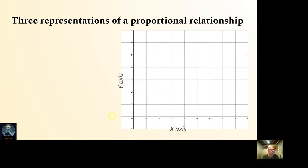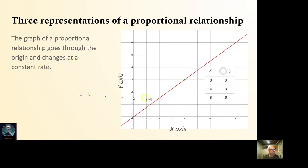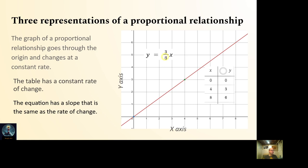There are three representations of the proportional relationship. You have the graph, which is a straight line, going through the origin, and it changes at a constant rate. Then we have the table, where the y values are going up by a constant amount, and the x value is going up by a constant amount. It's a constant rate of change. And then we have the equation, and the equation has a slope that is the same as the rate of change in both the table and on the graph.